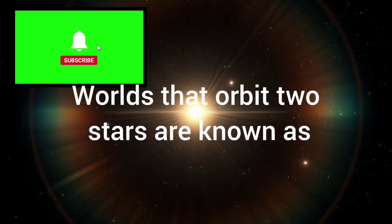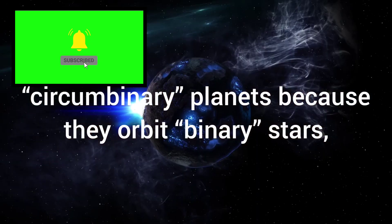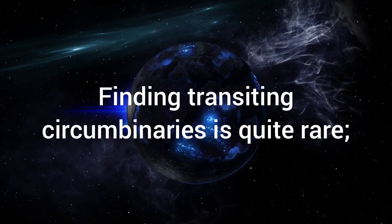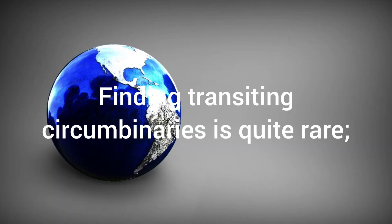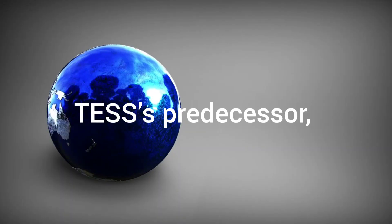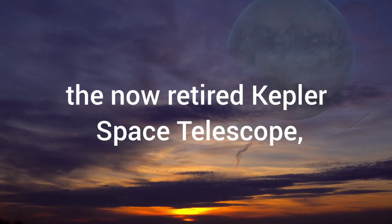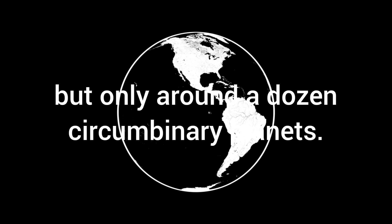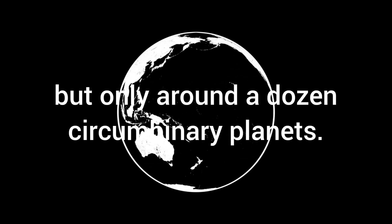Worlds that orbit two stars are known as circumbinary planets because they orbit binary stars, or stars in orbit around each other. Finding transiting circumbinaries is quite rare. TESS's predecessor, the now-retired Kepler Space Telescope, yielded discoveries of thousands of exoplanets, but only around a dozen circumbinary planets.